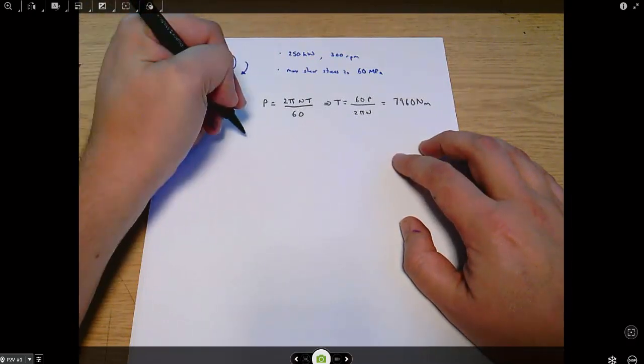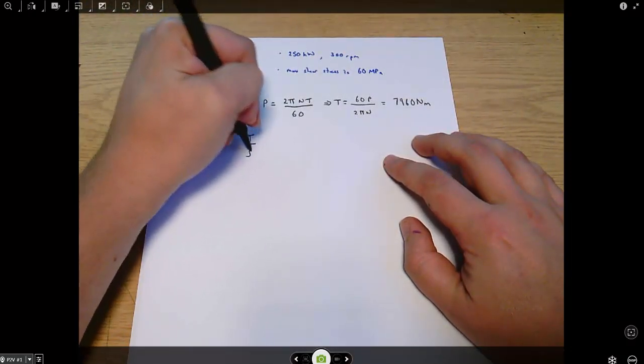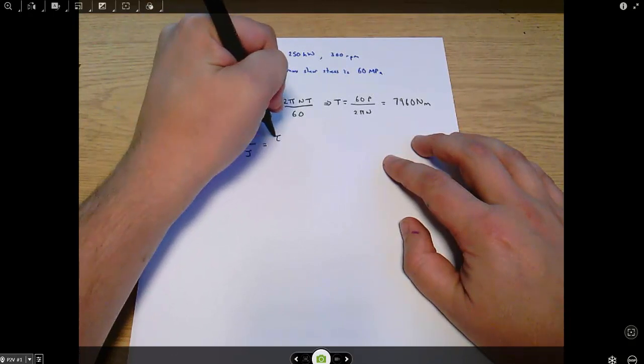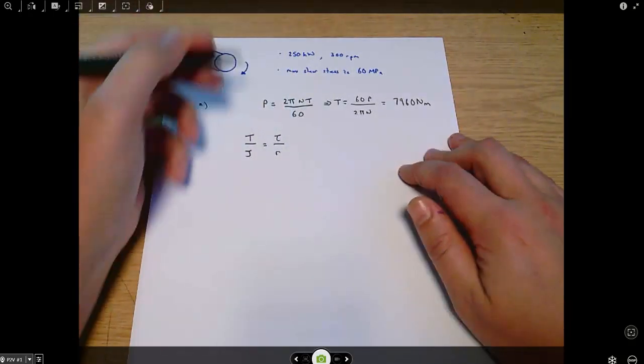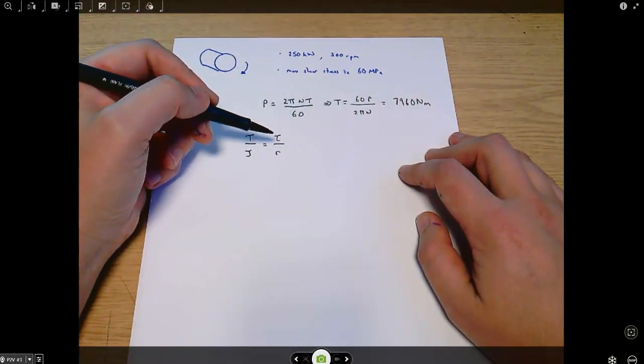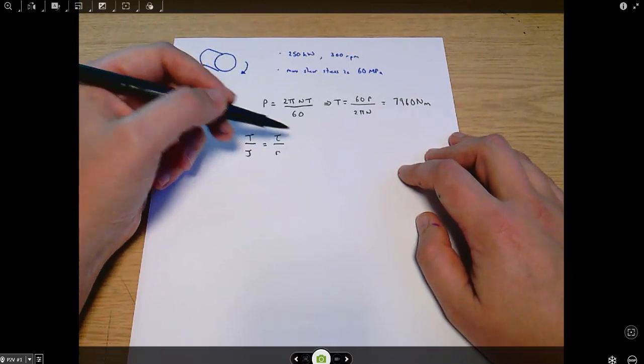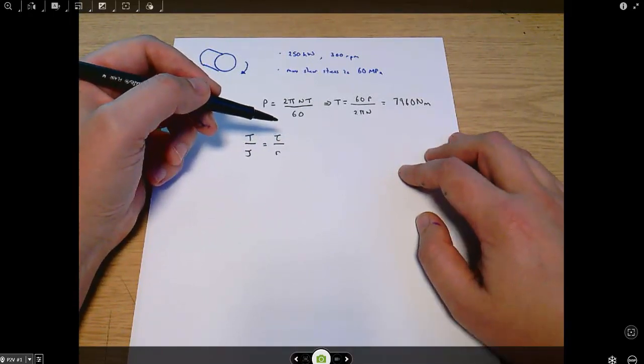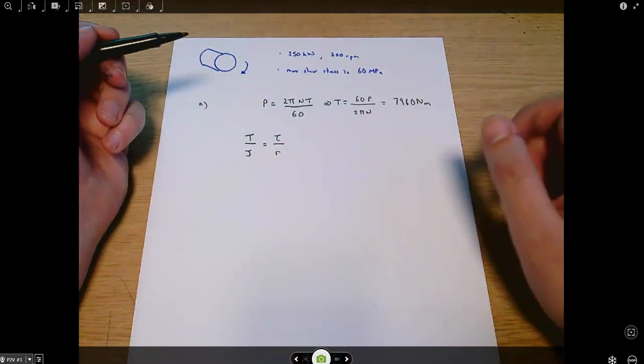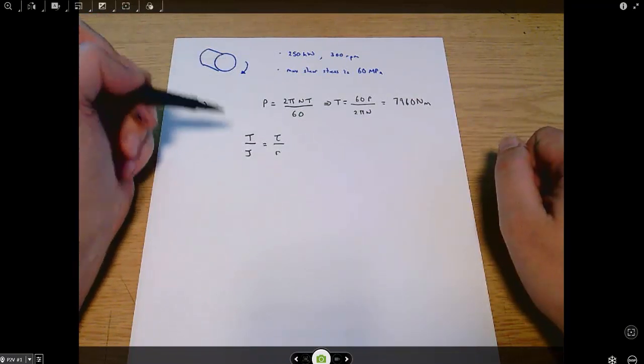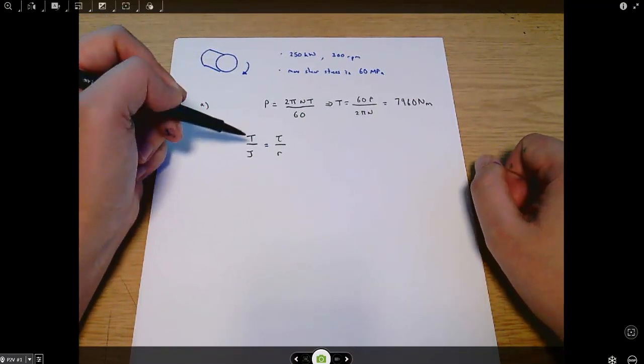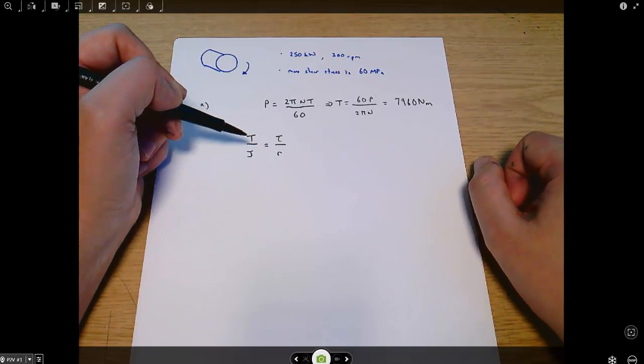Next we need to use the torsion equation which says T over J equals tau over R. Remember there's another equality within the torsion equation relating to the twist angle phi, but we're not interested in the amount of twist here so we just ignore that bit. We can pick any two parts of the torsion equation and just focus on them.